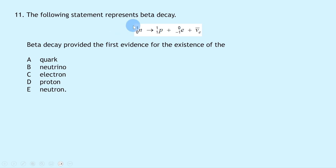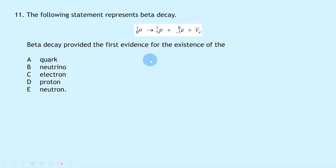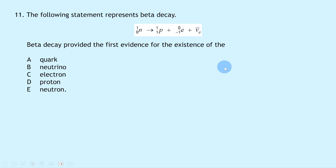Question 11 shows a beta decay: a neutron decays into a proton, an electron, and an electron anti-neutrino. Beta decay provided the first evidence for the existence of neutrinos, giving answer B.